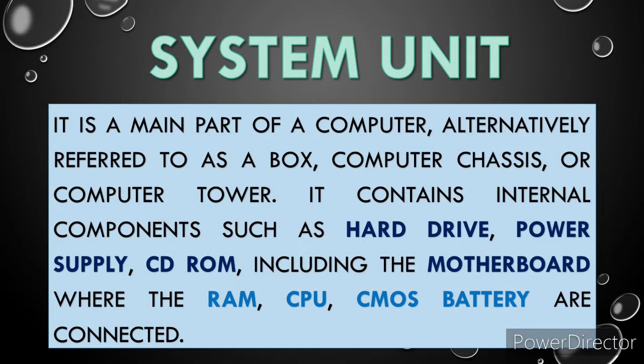The system unit is the main part of a computer, alternatively referred to as a box, computer chassis, or computer tower. It contains the internal components such as hard drive, power supply, CD-ROM, including the motherboard where the RAM, CPU, and CMOS battery are connected.